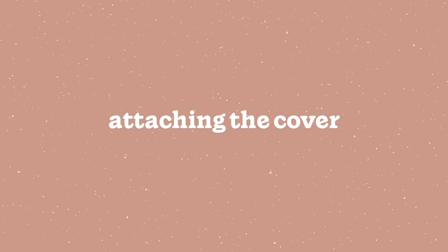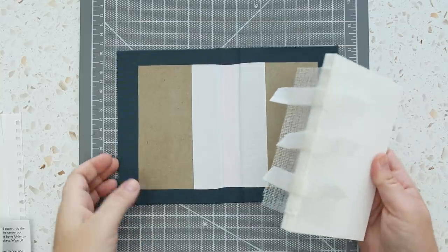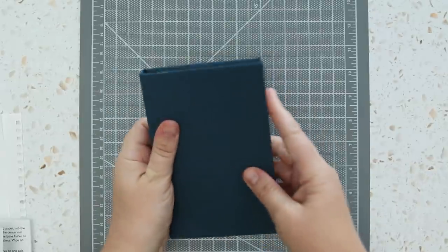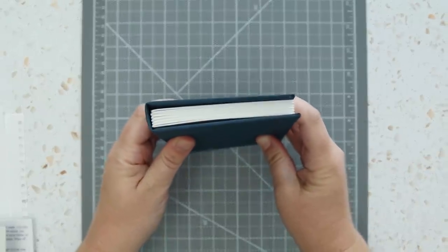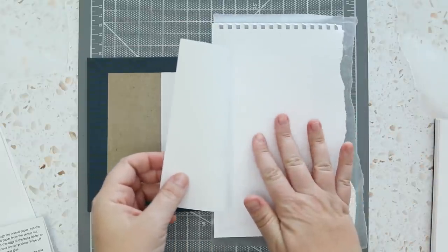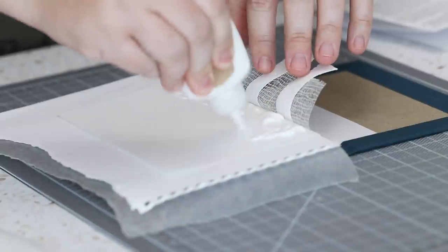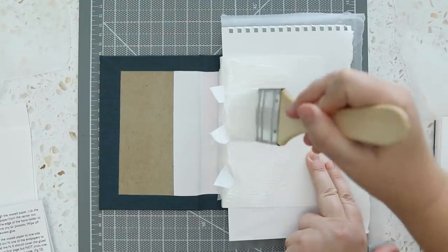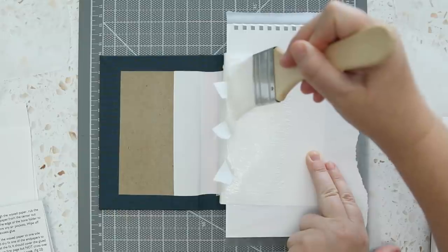Now for the most stressful part of any case bound project, attaching the cover. I'm dry fitting the book block with the cover to check all the margins, squaring the book block, putting my scrap paper in, and making sure the whole book block doesn't move while I apply glue. Which was kind of hard to do this way because applying glue just makes the whole thing move.